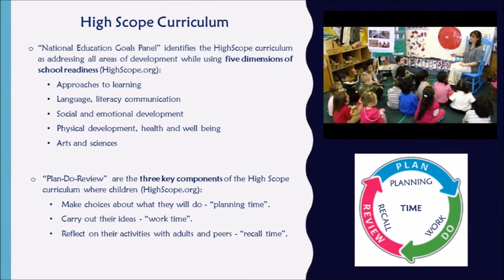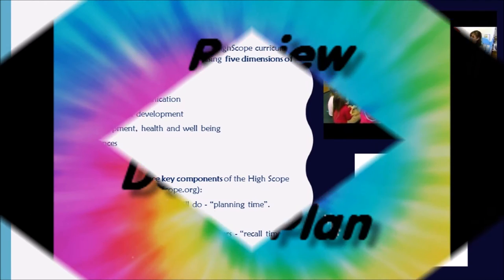High Scope Curriculum addresses all areas of development while using five dimensions for school readiness: approaches of learning, language literacy and communication, social and emotional development, physical development, health and well-being, and arts and sciences.